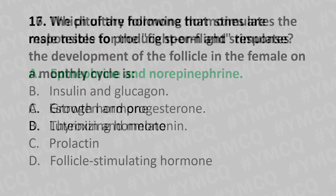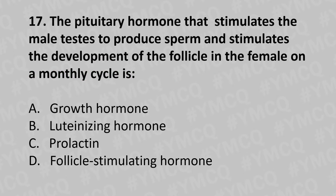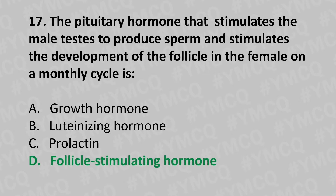Moving to our seventeenth question. The pituitary hormone that stimulates the male testes to produce sperm and stimulates the development of follicles in females on a monthly cycle is: Option A: growth hormone. Option B: luteinizing hormone. Option C: prolactin. Option D: follicle stimulating hormone (FSH). And the answer is Option D: follicle stimulating hormone.